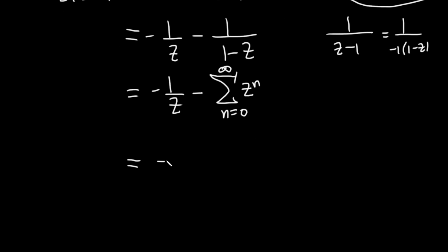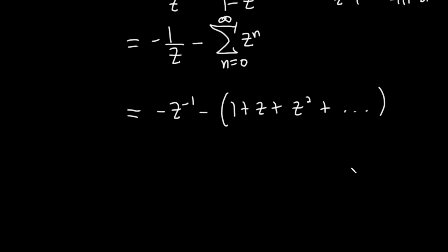You can write it a better way. This is negative z to the negative 1 minus, and then this would be 1 plus z, plus z squared. So you can write this as negative z to the negative 1, negative 1, negative z, negative z squared, and so on.